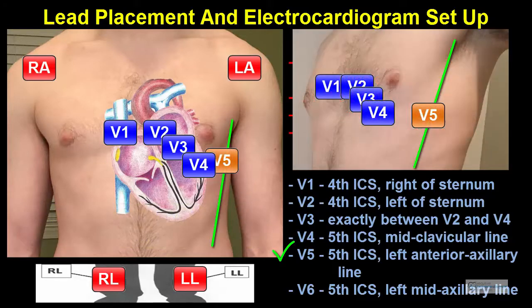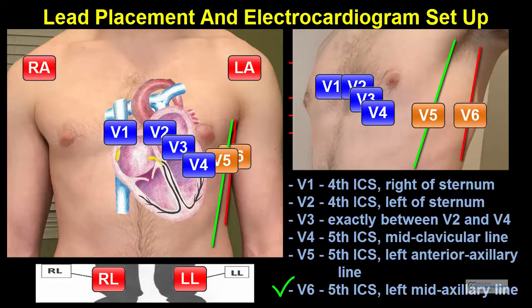V5 is placed in the 5th intercostal space, even with V4 in the left anterior axillary line. Finally, V6 is placed in the 5th intercostal space with V4 and V5 in the mid axillary line.